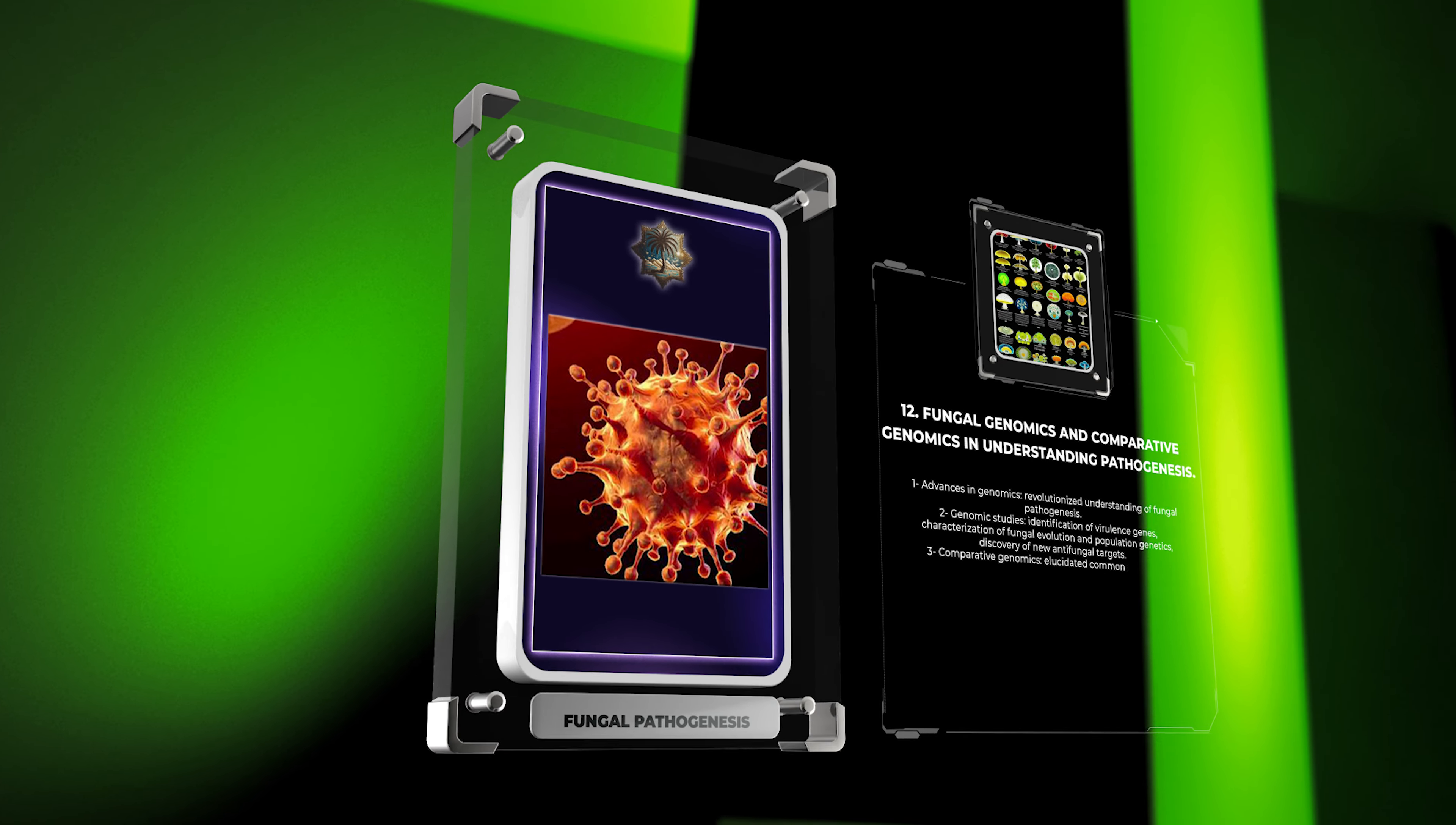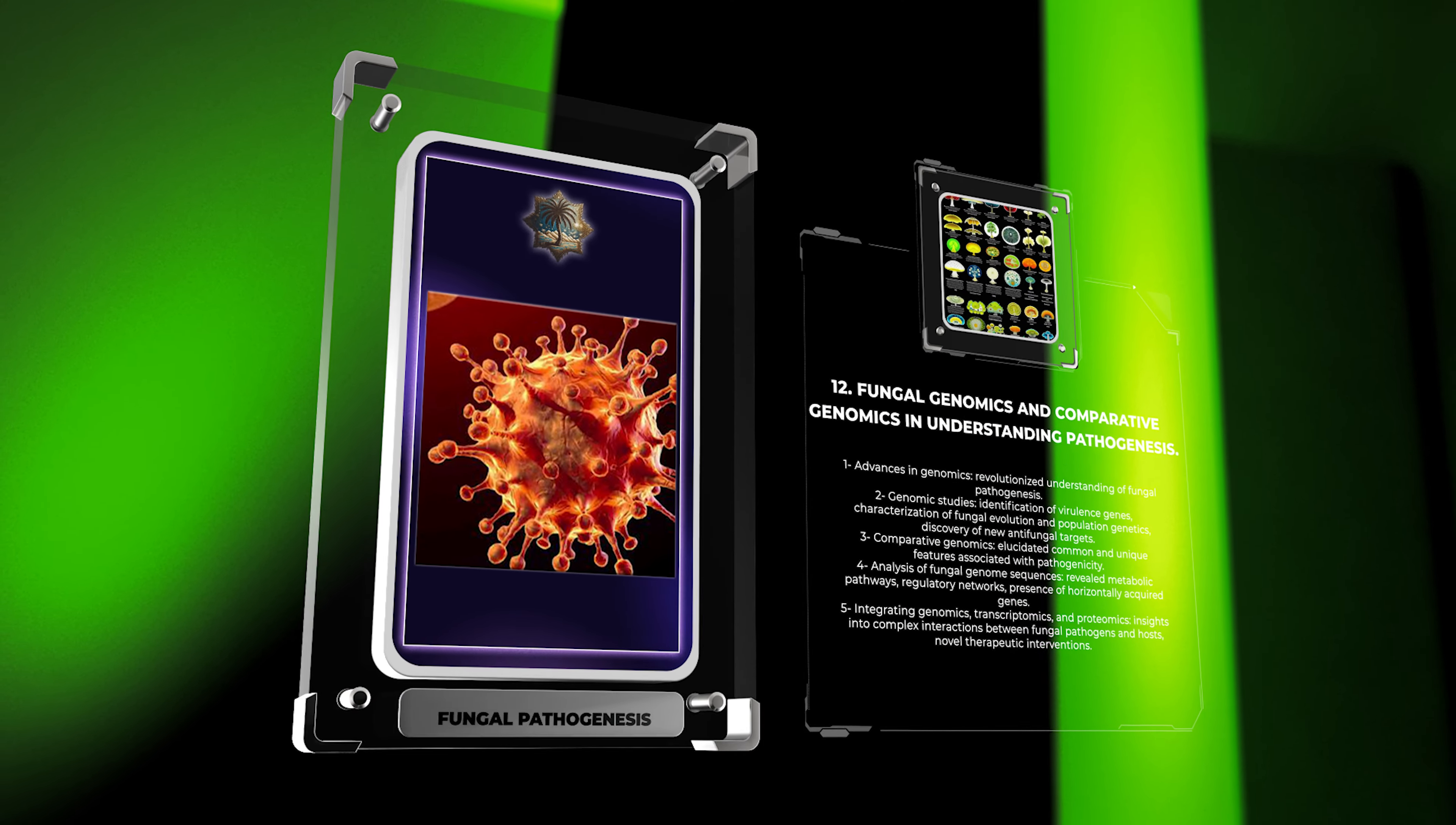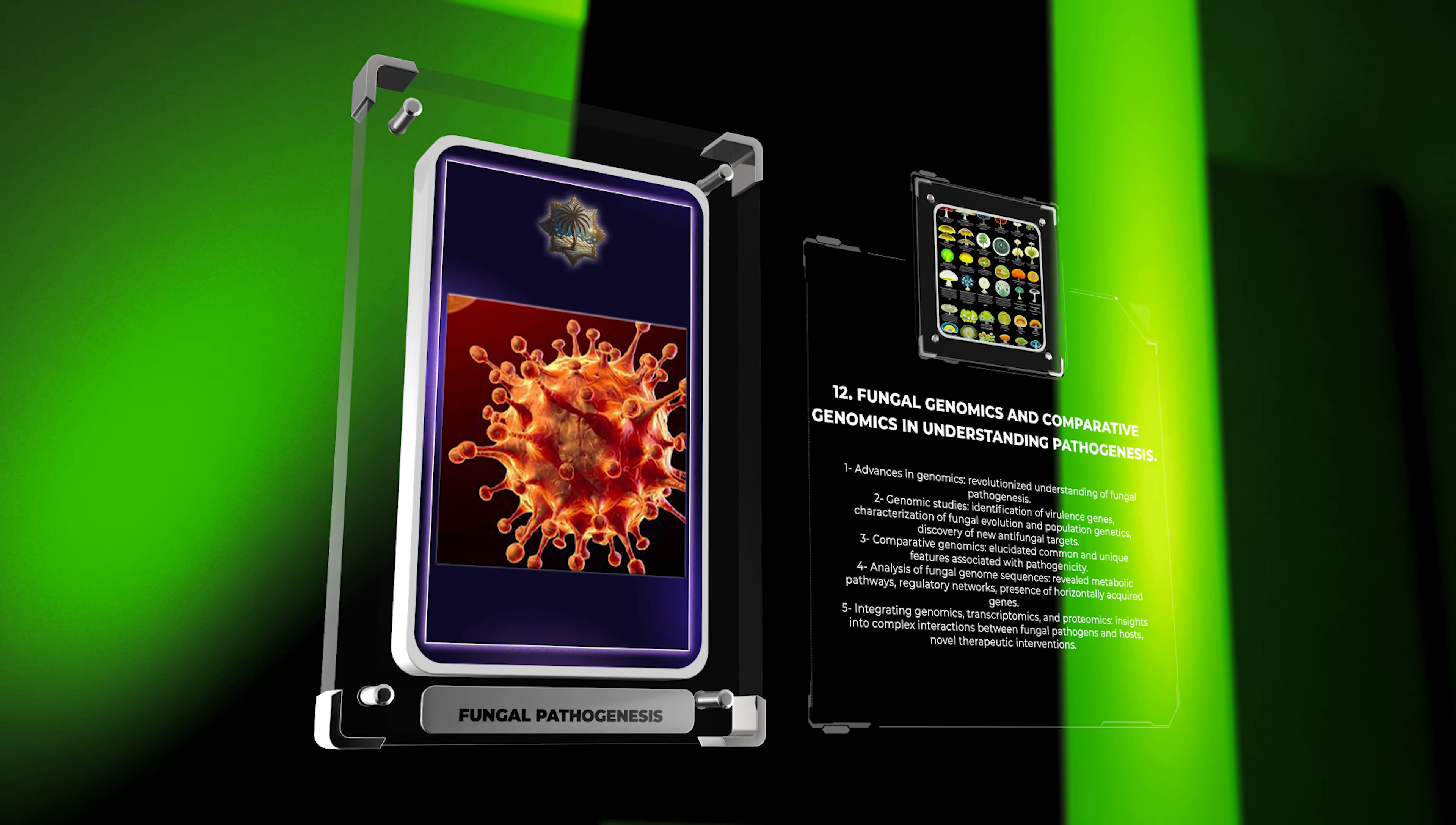Advances in genomics have revolutionized our understanding of fungal pathogenesis. Genomic studies have facilitated the identification of virulence genes, the characterization of fungal evolution and population genetics, and the discovery of new antifungal targets. Comparative genomics, comparing the genomes of multiple fungal species, has elucidated common and unique features associated with pathogenicity. Furthermore, the analysis of fungal genome sequences has revealed metabolic pathways, regulatory networks, and the presence of horizontally acquired genes. Integrating genomics, transcriptomics, and proteomics offers unprecedented insights into the complex interactions between fungal pathogens and their hosts, paving the way for novel therapeutic interventions.